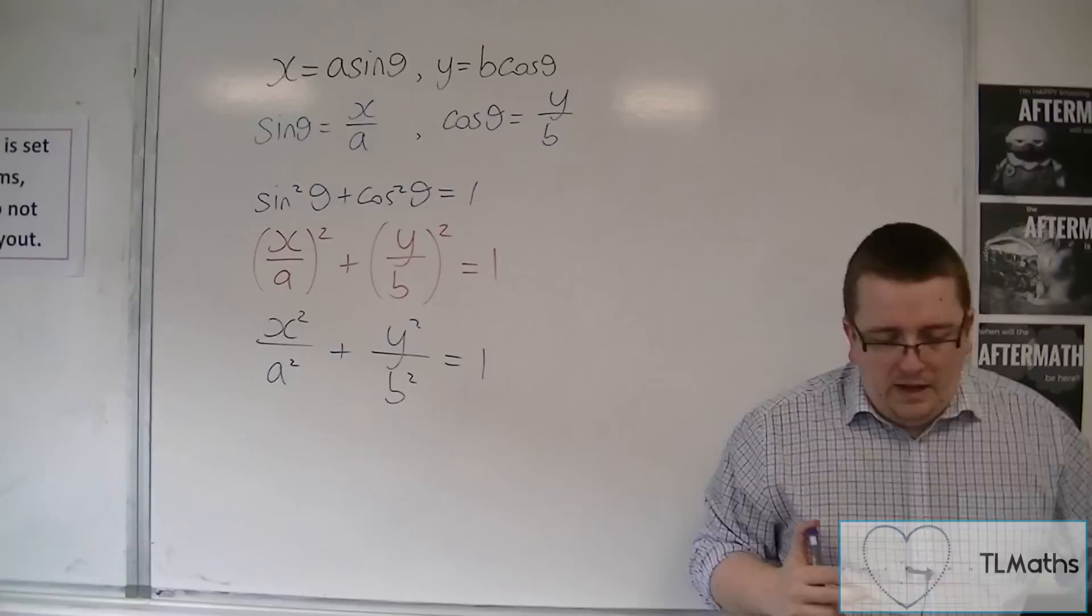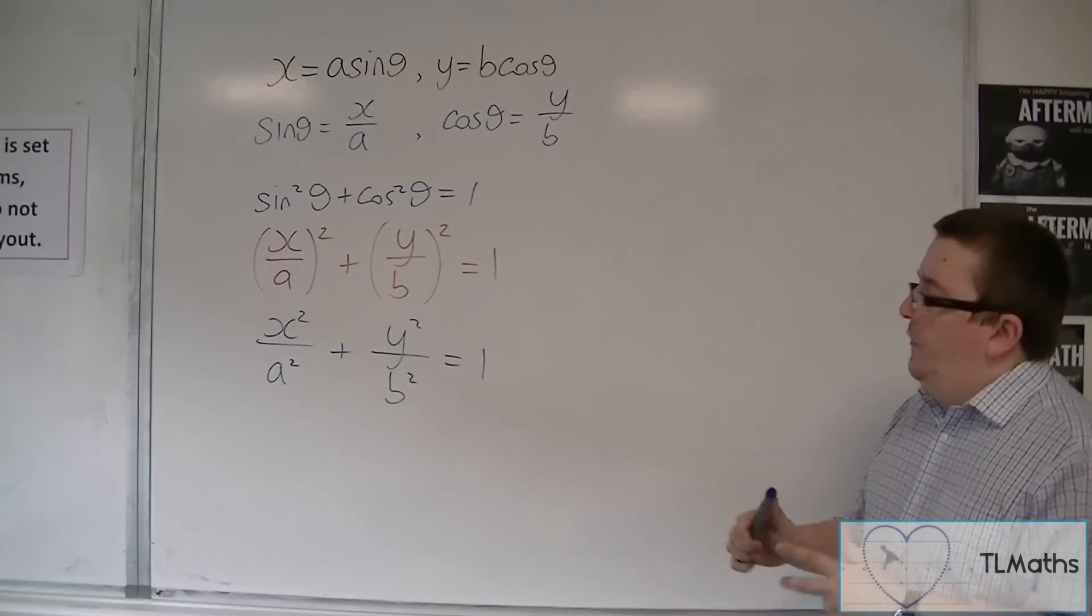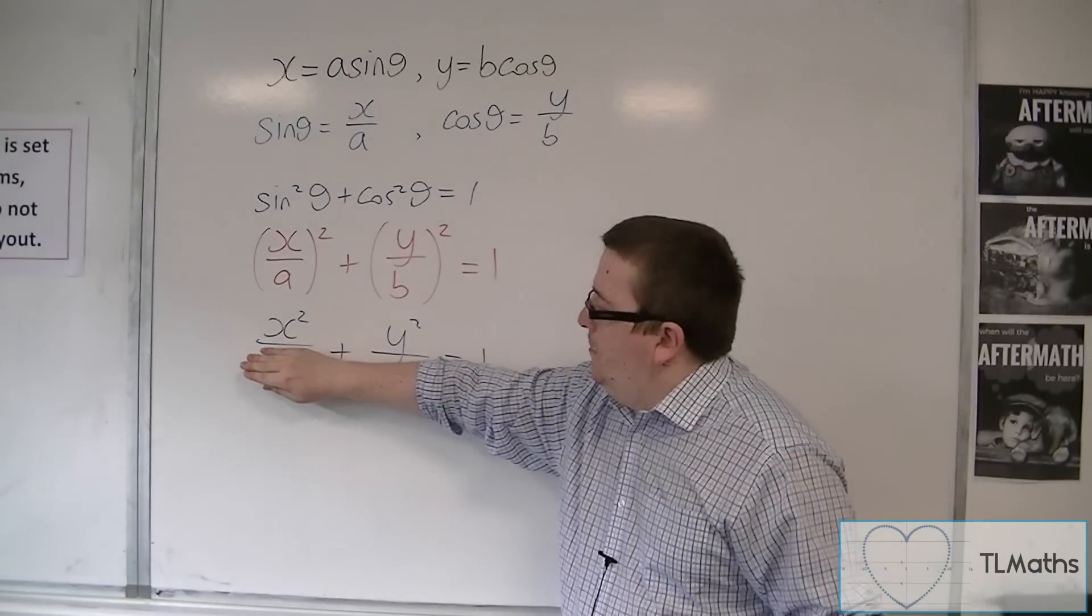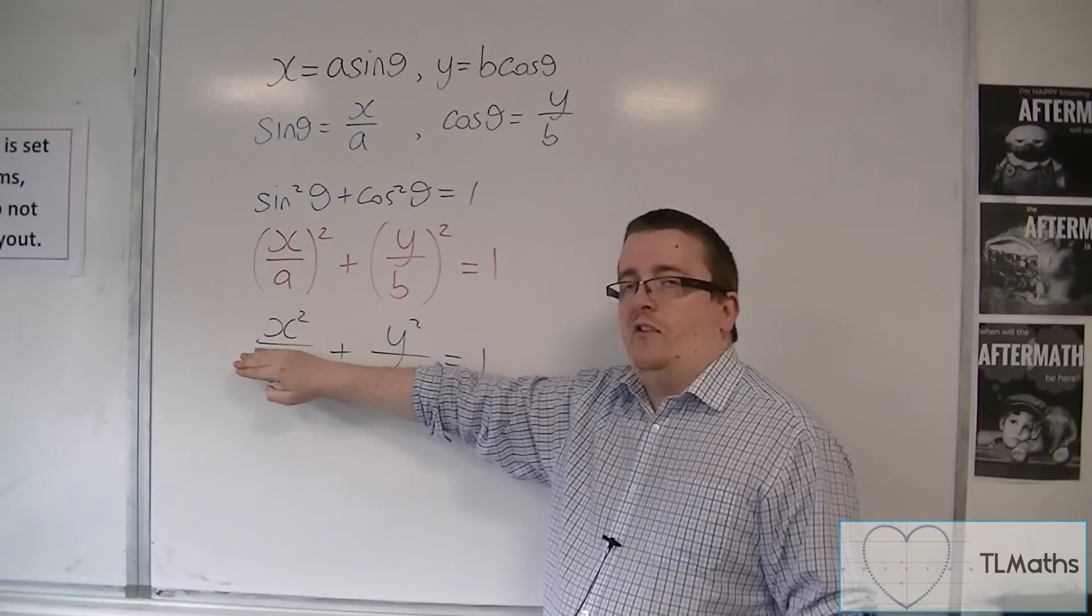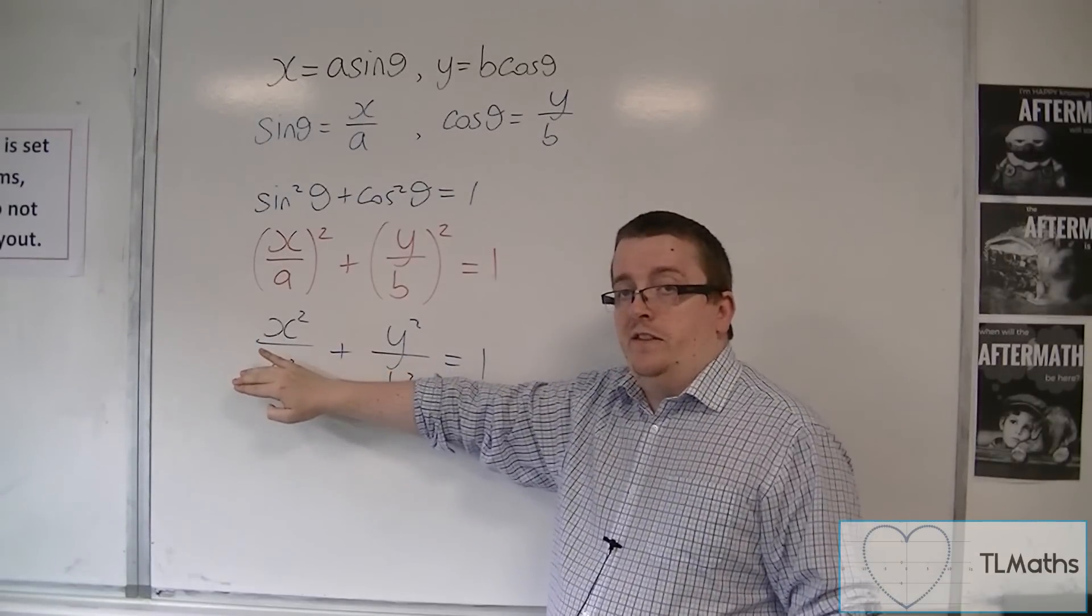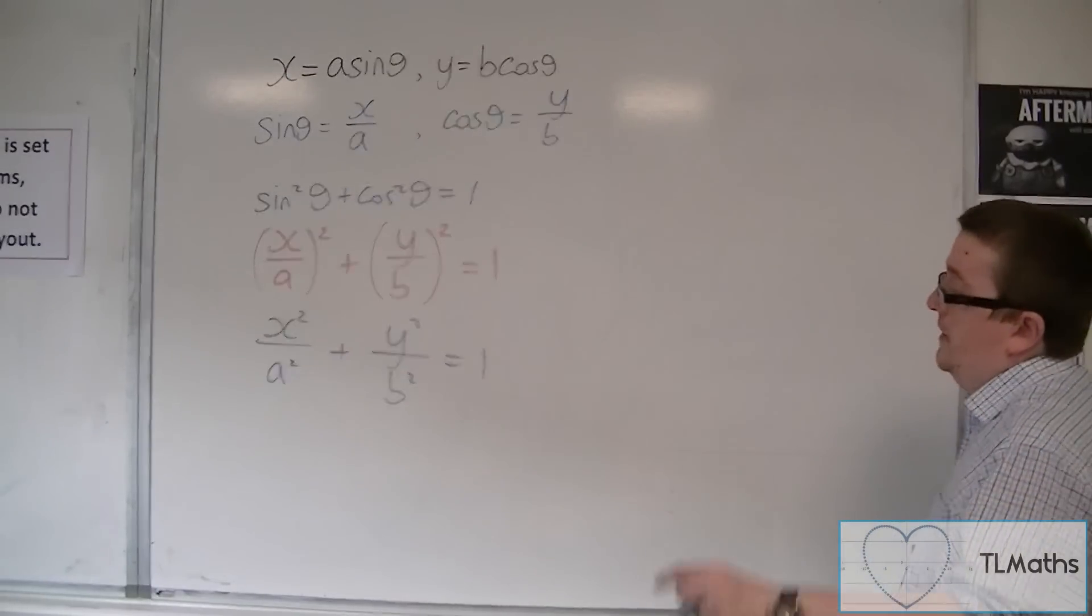Now if we think about this, if I just had X squared plus Y squared equals 1, you should be able to identify that that is a circle centered at the origin with radius 1. That's the first thing to notice here.